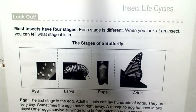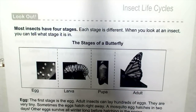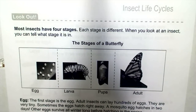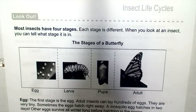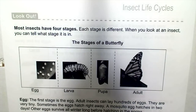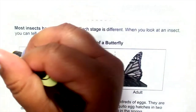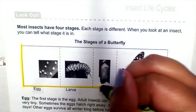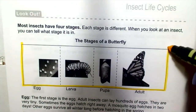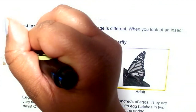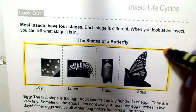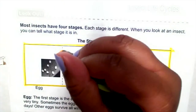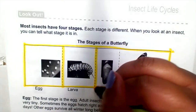Most insects have four stages. Each stage is different. When you look at an insect you can tell what stage it is in. These are the stages. An insect has four stages.